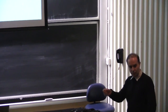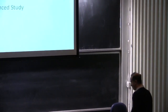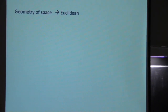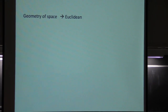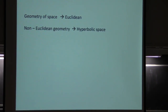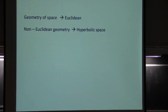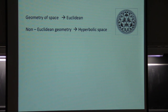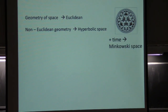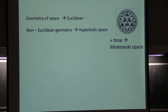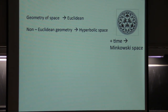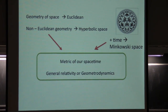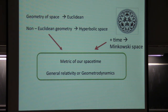I'll be talking about the relationship between quantum mechanics and the geometry of space-time. People used to think the geometry of space was Euclidean. Then it was realized we could have non-Euclidean geometries, and one of the simplest is hyperbolic space — shown here in an Escher drawing. If we add time, we get the geometry of flat Minkowski space with special relativity. These two things together — non-Euclidean geometries and Minkowski space — gave rise to the metric of our own space-time governed by general relativity.